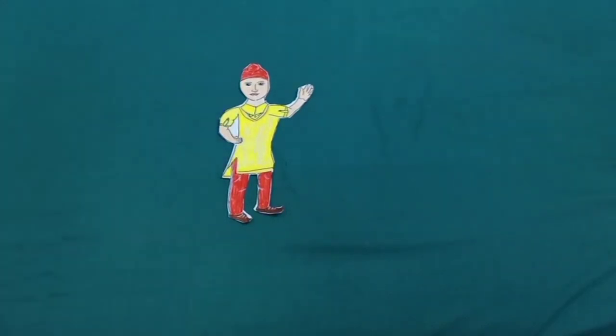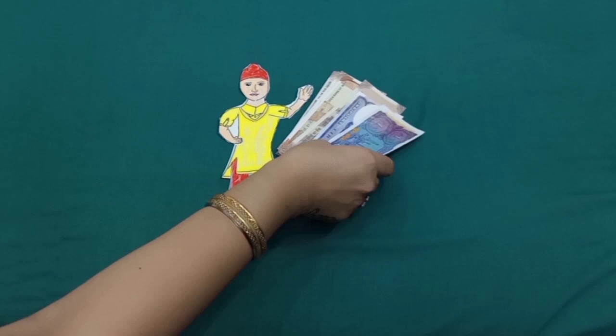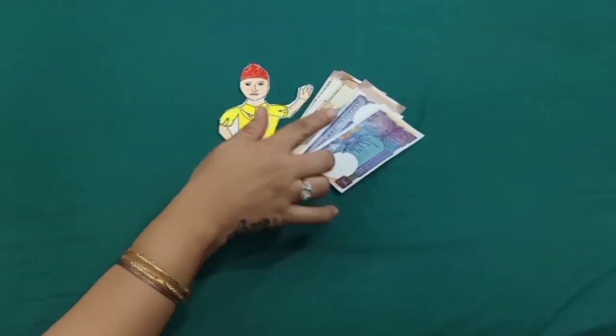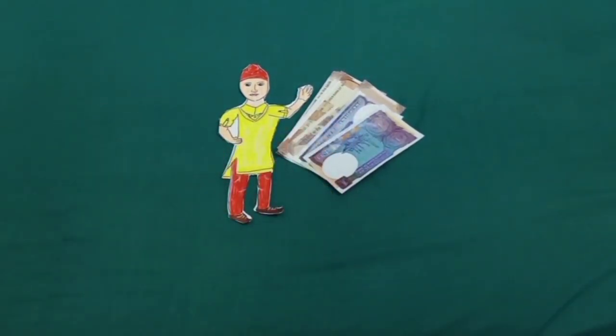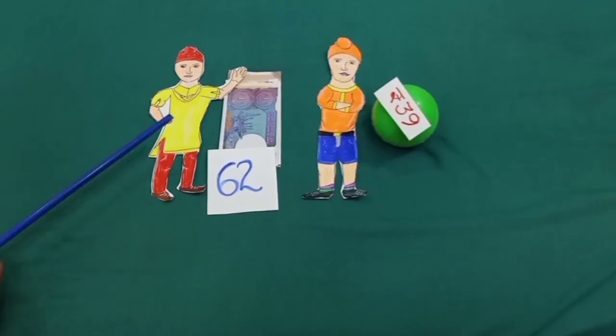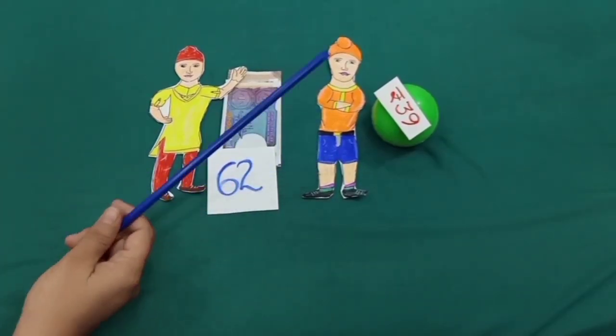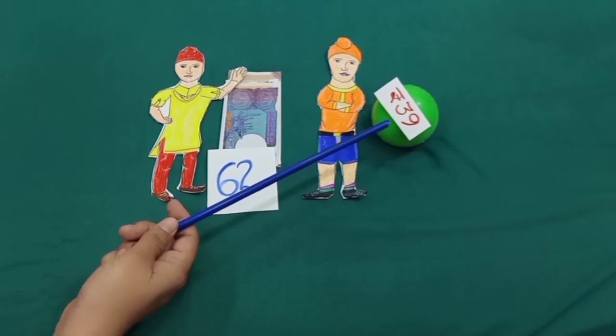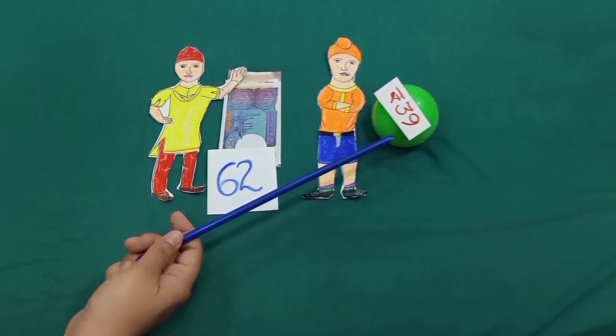He is Puneet and he has 62 rupees. Six notes of 10 and two notes of 1, 62 rupees. His younger brother Prince wants to buy a ball and its price is 39 rupees.